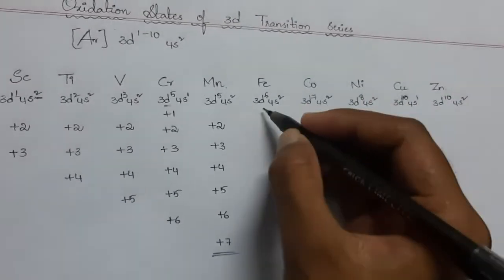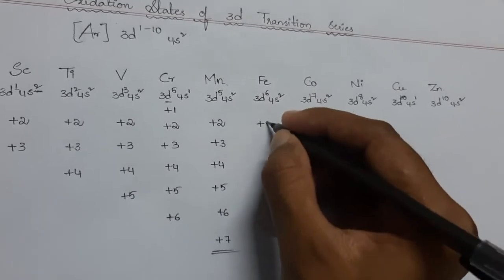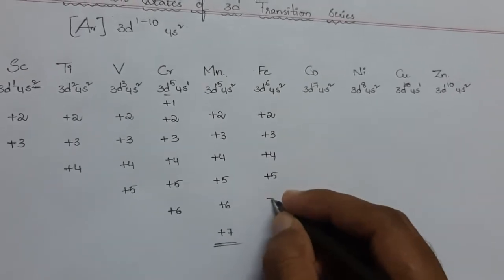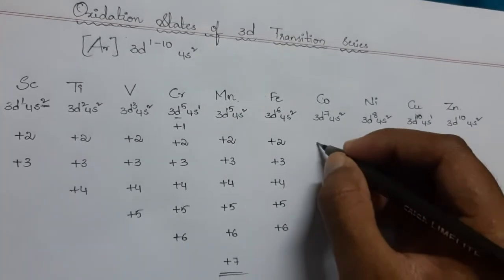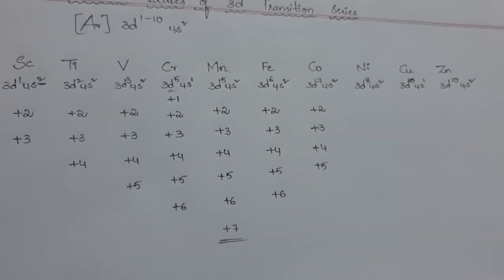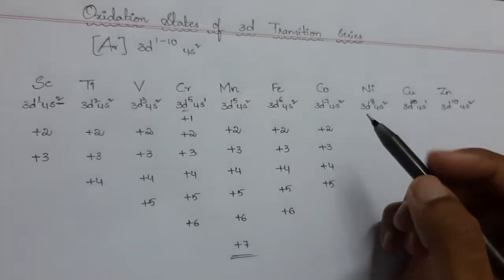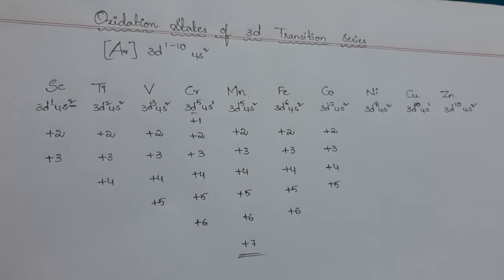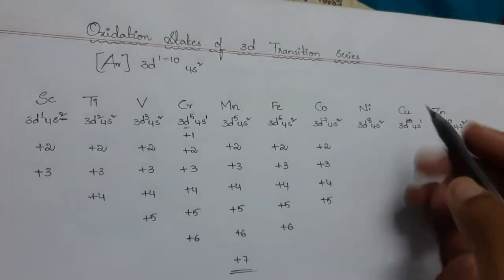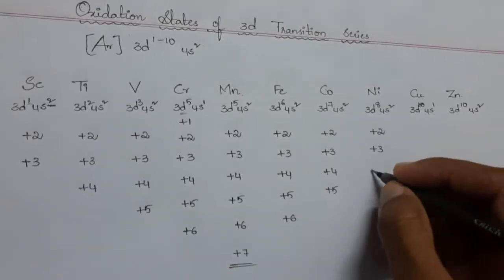Iron has an electronic configuration of 3d⁶ 4s² and can acquire oxidation states of +2, +3, +4, +5, and +6. Cobalt can exhibit +2, +3, +4, and +5. Here we can see that the oxidation states from manganese to zinc are in decreasing order — from scandium to manganese the oxidation states increase, and from manganese to zinc they decrease. Nickel has oxidation states of +2, +3, and +4.